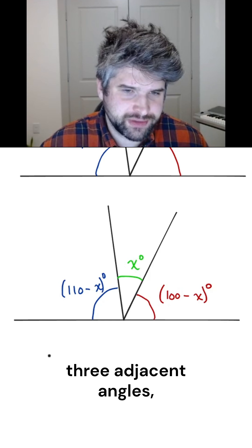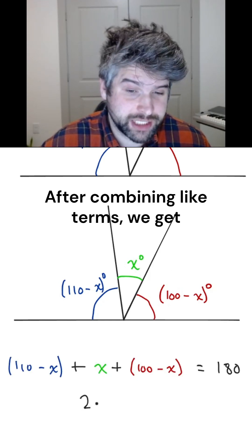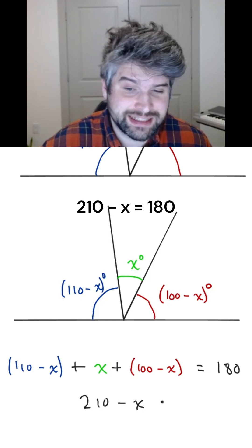Now we can add the measures of these three adjacent angles. And when we add them all together, we should expect to see 180. After combining like terms, we get 210 minus x equals 180.